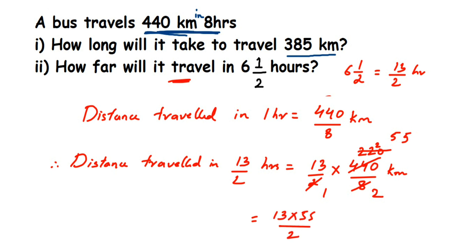13 multiplied by 55 divided by 2 gives 715 by 2 kilometers, or in decimal, 357.5 kilometers. Both questions used the unitary method — for the first question I found time per kilometer, and for the second I found distance per hour, making it easy to scale to the required value.